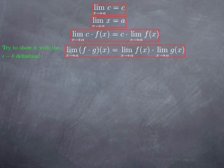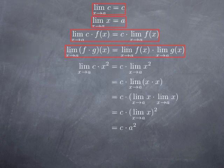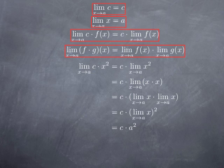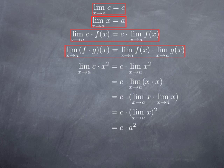Without going into the proof, let's look at some consequences. For instance, looking at the limit of c times x squared at a: we've seen that with a constant multiple, we can pull the constant out, giving c times the limit of x squared. But x squared is a product of x by itself, and the limit of a product is the product of the limits — provided both limits exist. So this is c multiplied by the limit of x times itself, i.e., the limit of x squared. Since the limit of x at a is a, we get c times a squared.